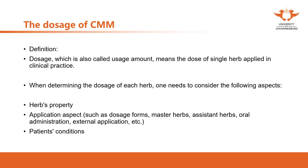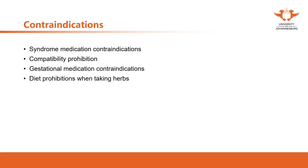You also need to think about how to administrate the herb — oral taking or external application — as these may affect the different dose. When we talk about the contraindications, we need to think about the syndrome and the medicine, the compatibility of the medicine, the gestational medicine, and the food when taking the herbs. These are different aspects we need to think about.